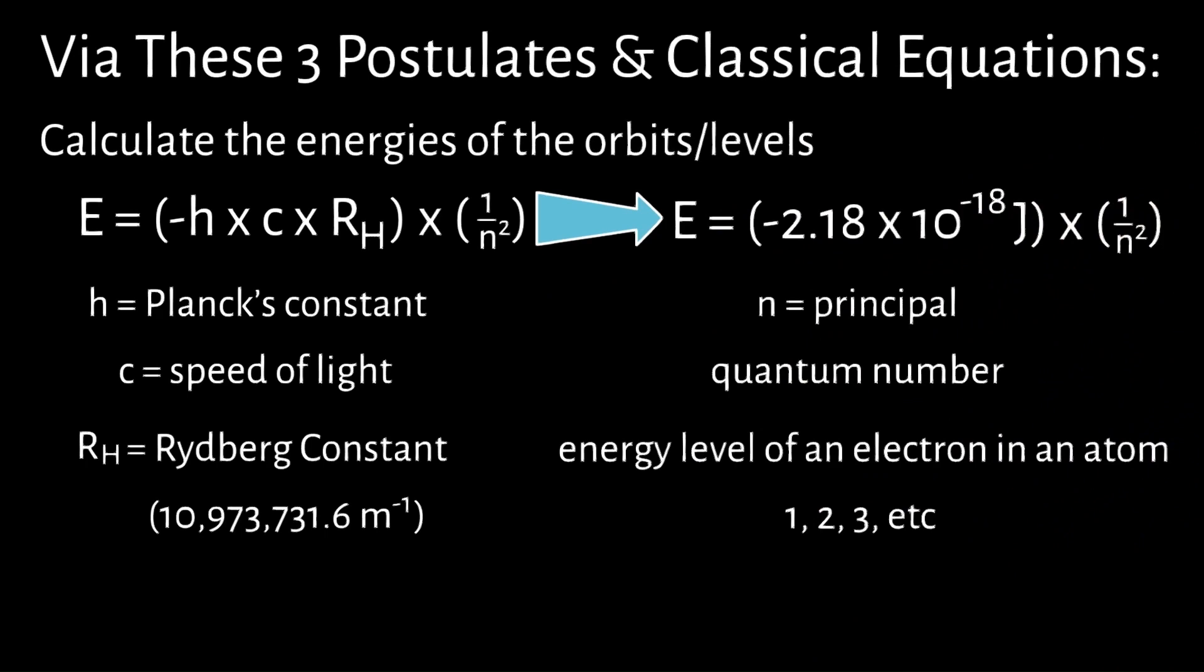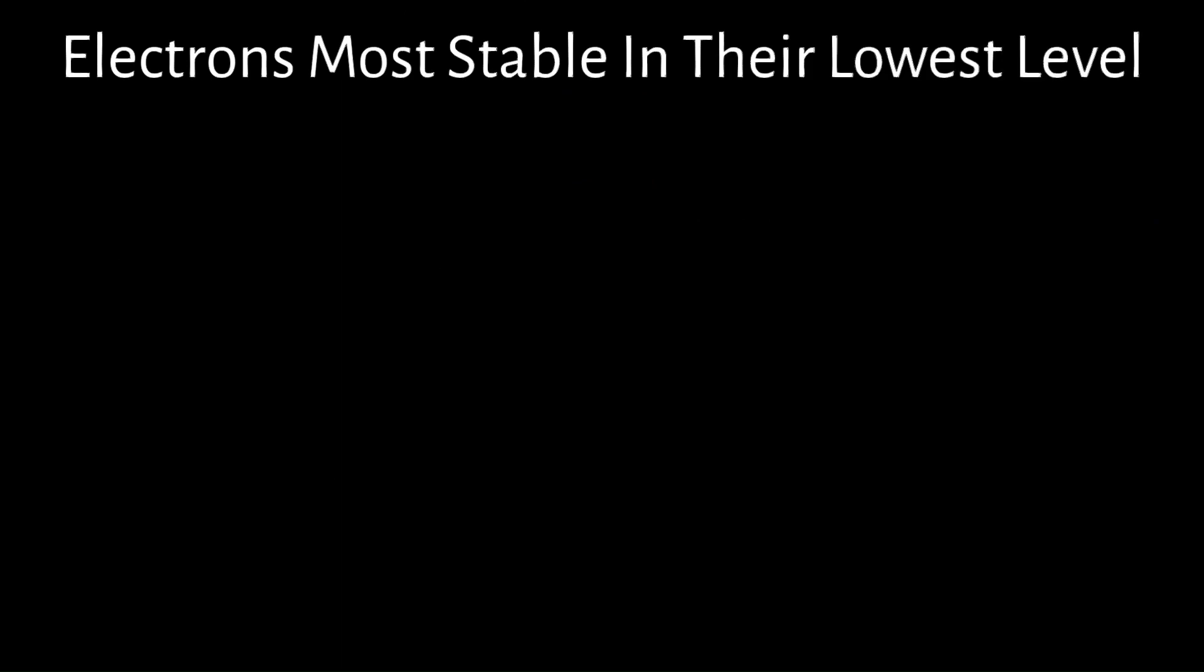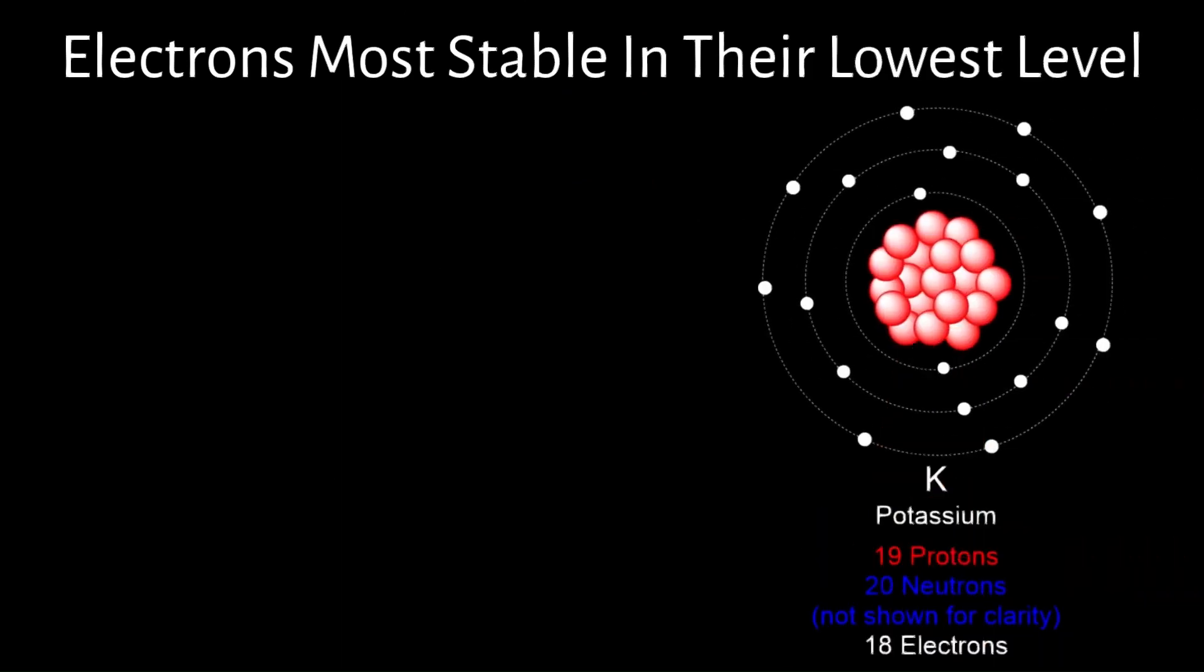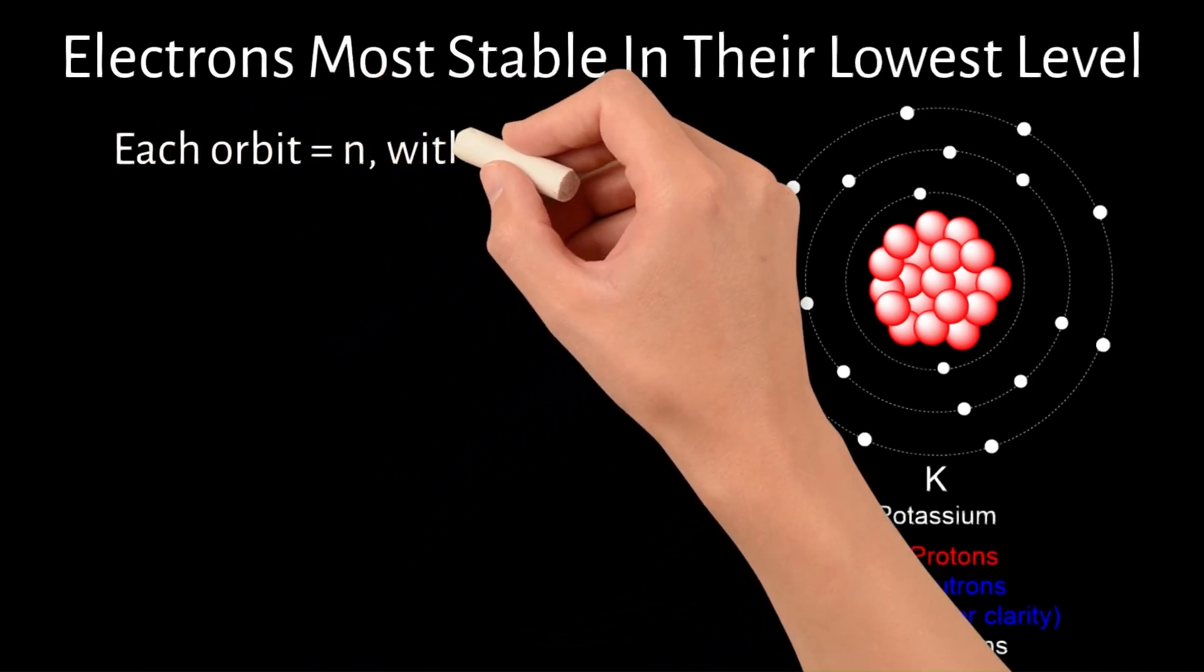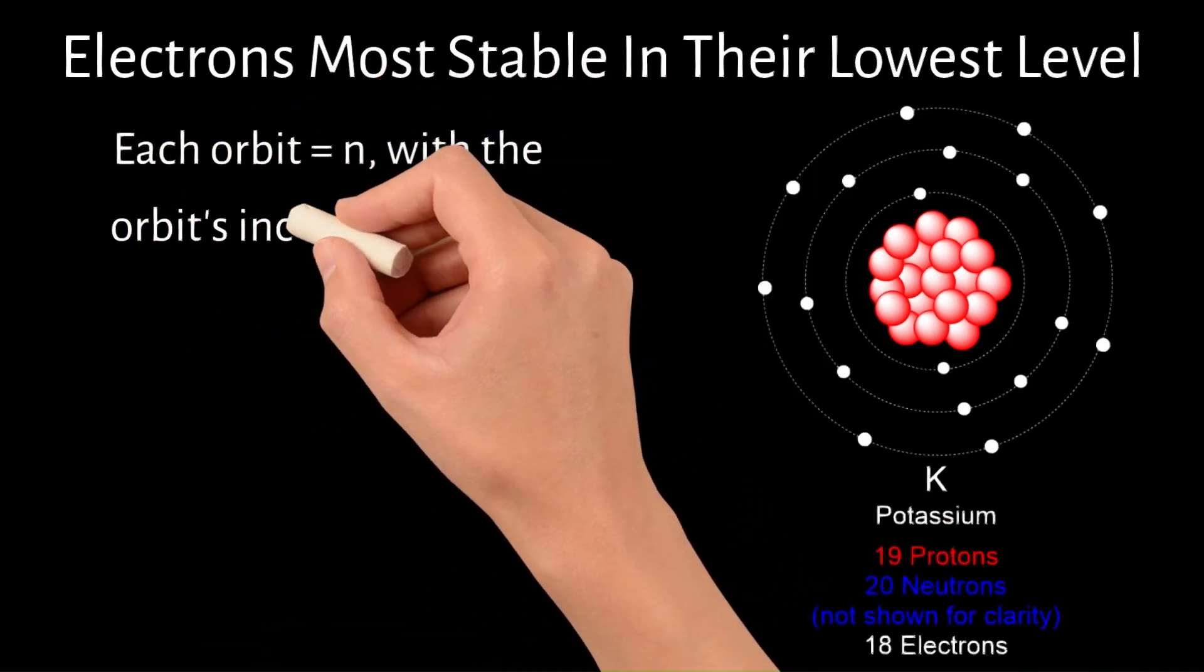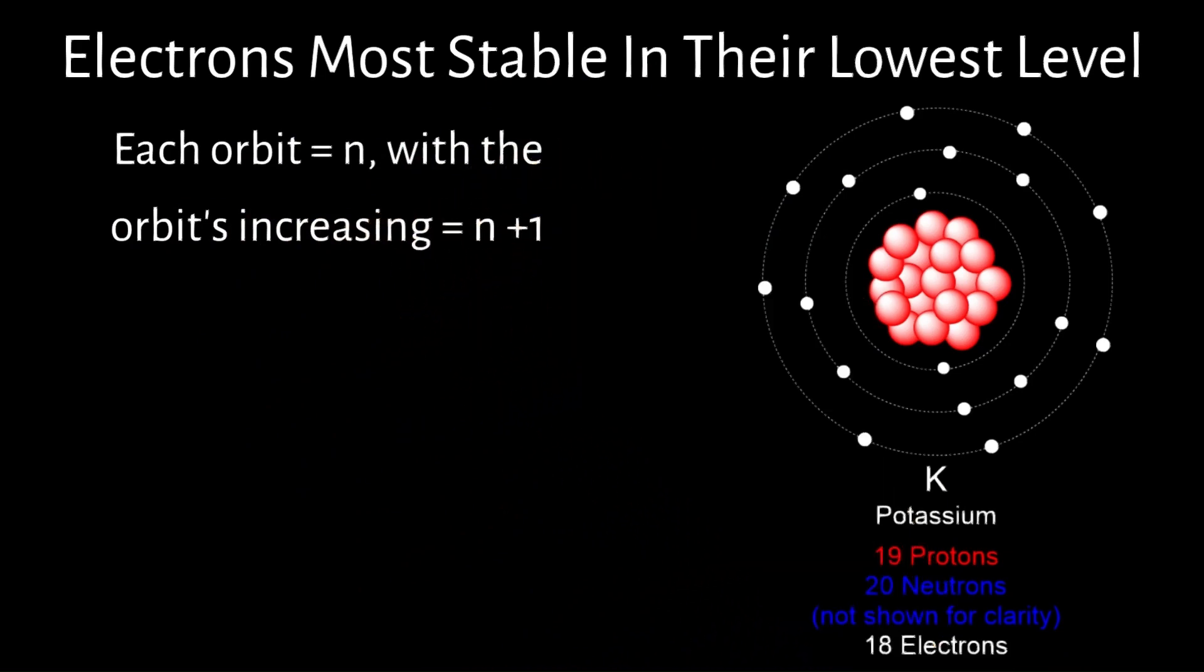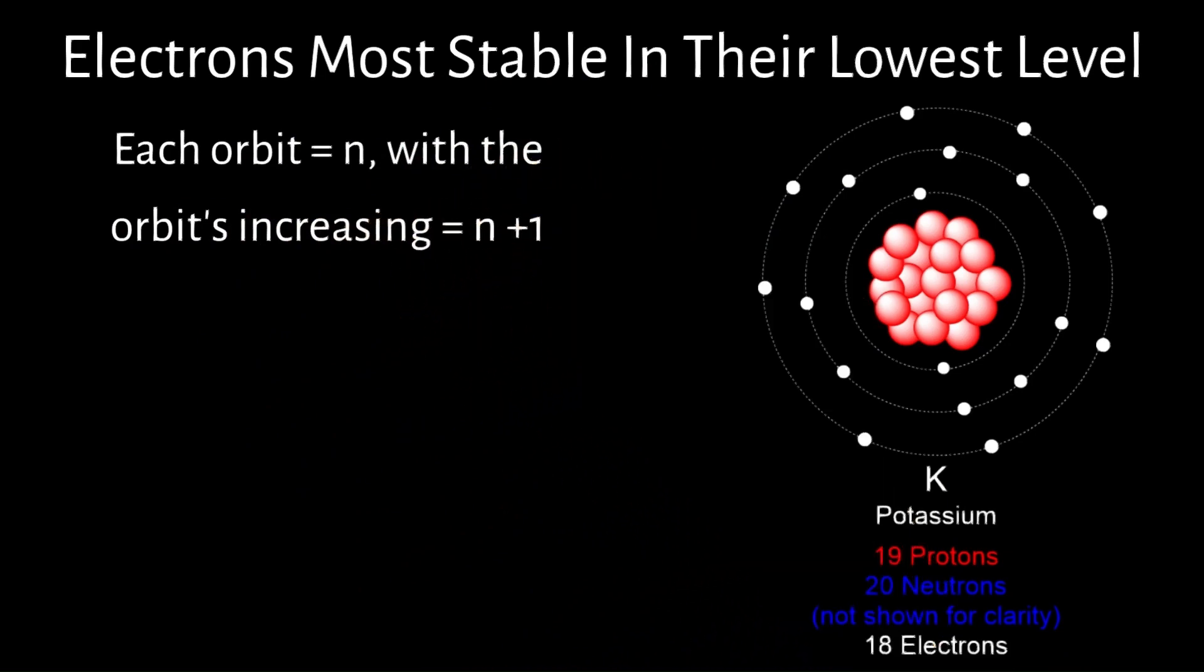This equation ultimately led to our understanding that electrons are most stable in their lowest level, closest to the nucleus. Bohr achieved this via the following rationale. Each allowed orbit in an atom corresponds to an integer value of N with the orbit's radius increasing with N. Therefore, the orbit closest to the nucleus is designated as N equals 1, the next closest is N equals 2, and so on.